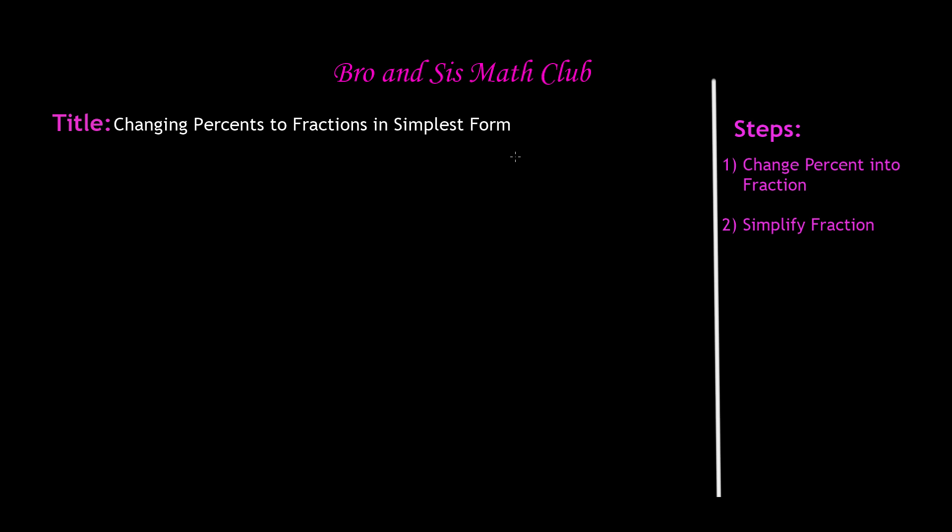So let's go ahead and take the example 35%. Now, we all know that percent means out of 100. So 35% means 35 parts out of 100. So we are now done with step one, which was to change the percent into a fraction.